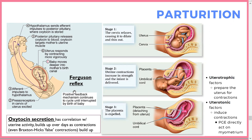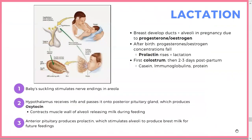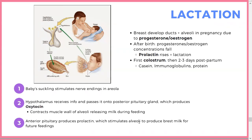Prostaglandins act on the myometrium to induce contractions. Lactation is also hormonally guided: the baby's suckling stimulates nerve endings in the areola, signaling the hypothalamus, which signals the posterior pituitary to release oxytocin. Oxytocin contracts the alveolar muscle walls in the breast to release milk. Simultaneously, the anterior pituitary produces prolactin to stimulate the alveoli to produce breast milk.